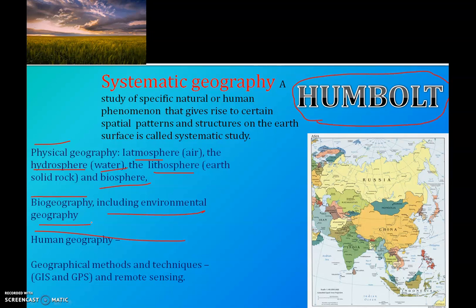Biogeography, including environmental geography, focuses on various kinds of forests, grasslands, distribution of flora and fauna, as well as the human-nature relationship. Human geography describes culture, population, social and economic activities, as well as political aspects.